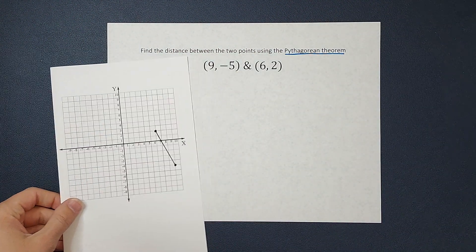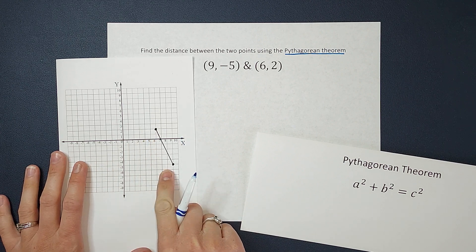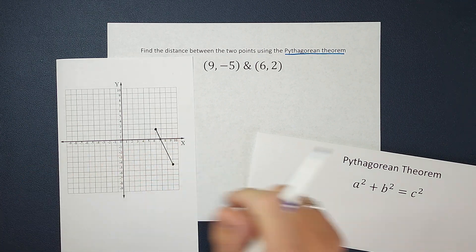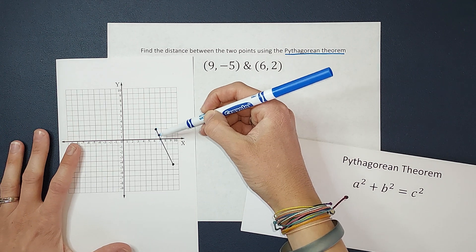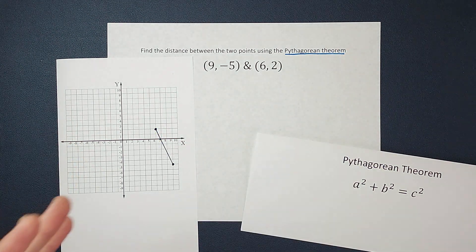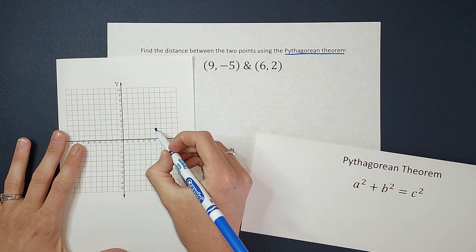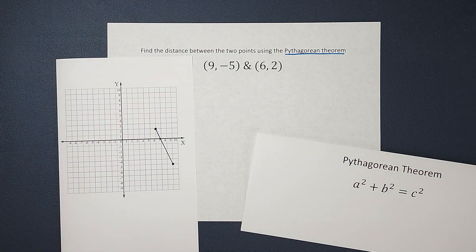I have a visual for you. So this is the distance we're looking for — this is my point (9, -5) and (6, 2). I'm looking for how long that line is, the distance between those two points.